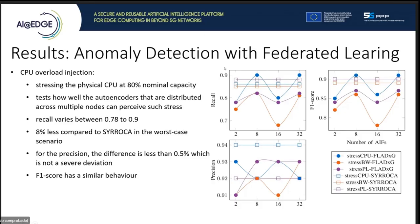The anomaly detection based on federated learning was evaluated using failure injection. On the right you can see three graphs — one for recall, one for F1 score, and one for precision. The dots represent the federated model and the squares represent the baseline centralized model. The y-axis is zoomed in, so the values are closer than they appear. For CPU, the recall oscillates around the centralized model, the F1 score is very similar, and the precision is only less than 0.5% below.